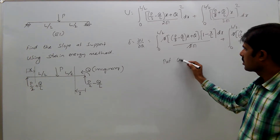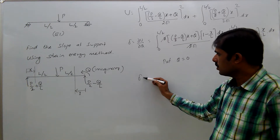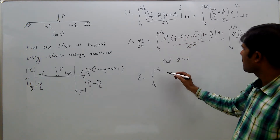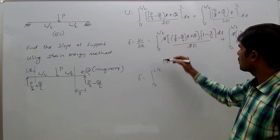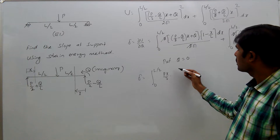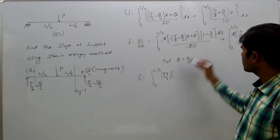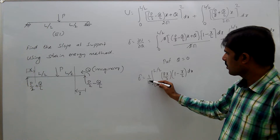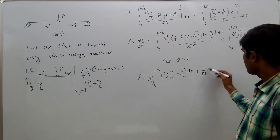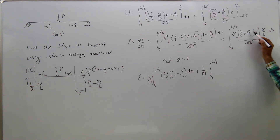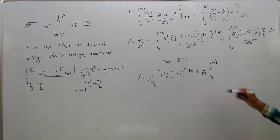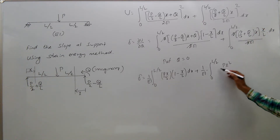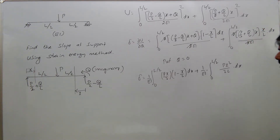Now put the imaginary load Q equal to 0. Delta equals integral from 0 to L/2 of Px/2 into (1 minus x/L) dx by EI, keeping 1/EI outside, plus 1/EI integral from 0 to L/2 of Px/2 into x/L dx. After putting Q=0, we get Px/2 terms in both integrals. Now splitting the expression.